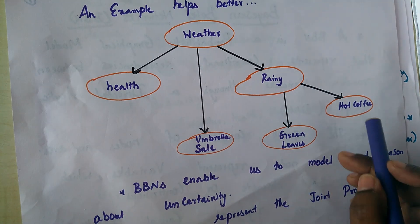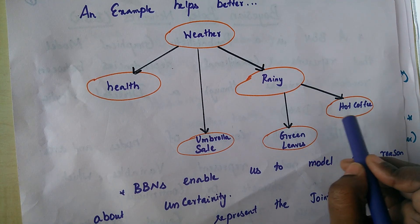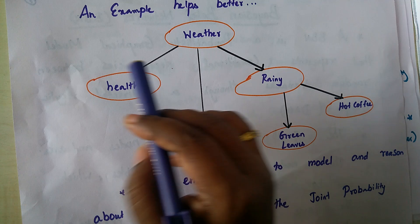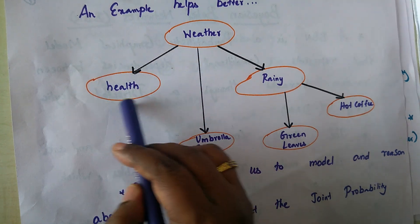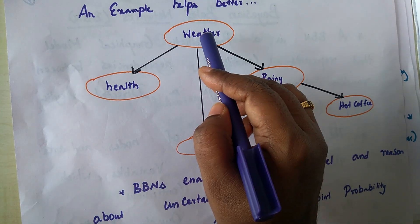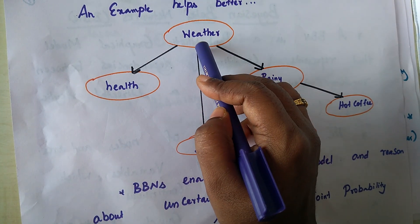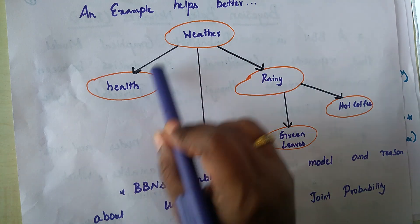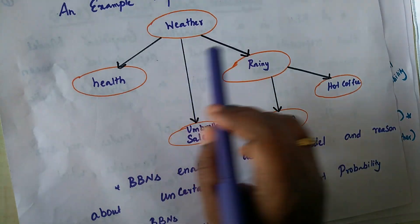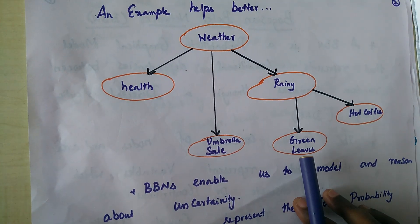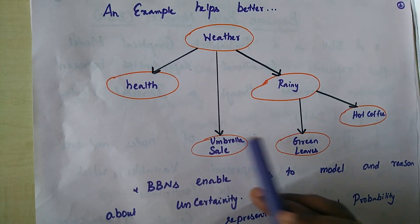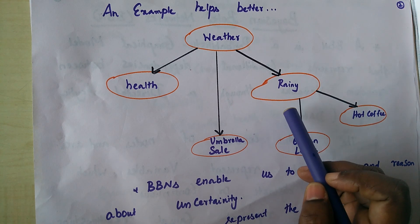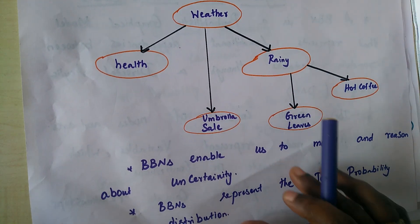Similarly, the probability of making a hot coffee is high when it is a rainy day. The probability of having good health is dependent on the weather. This is what the directed acyclic graph tells us — we can explore uncertainties and make certain inferences and reasoning.